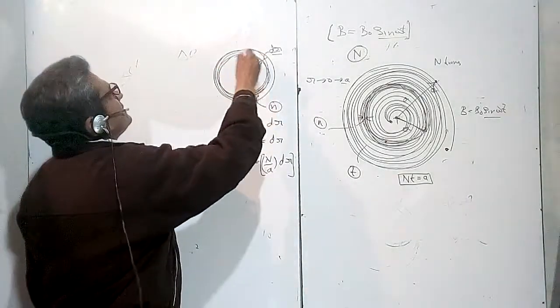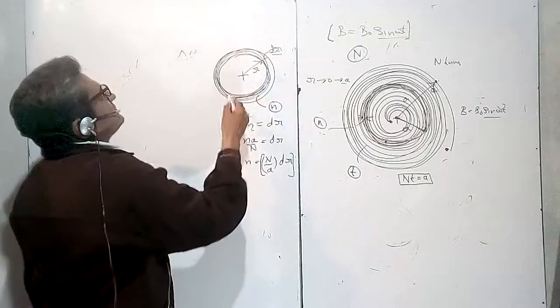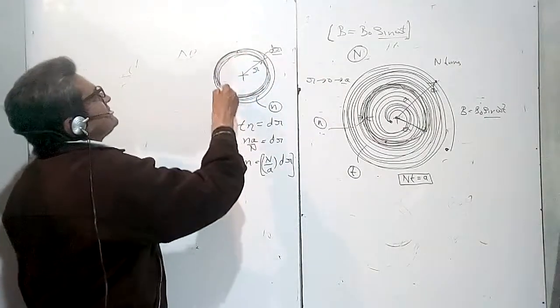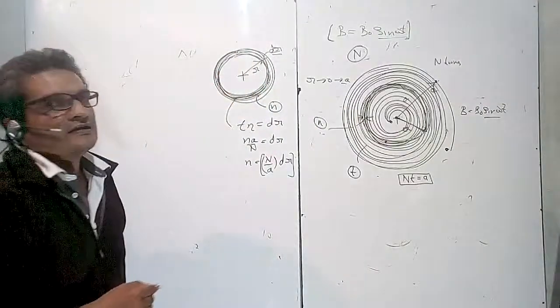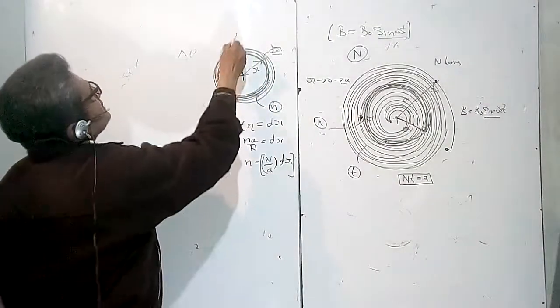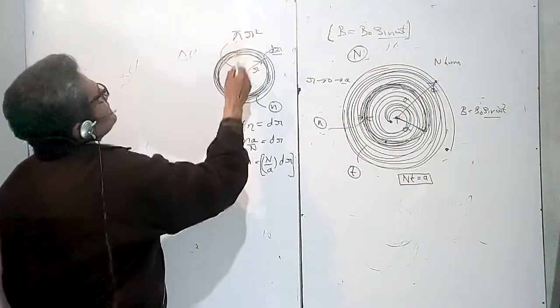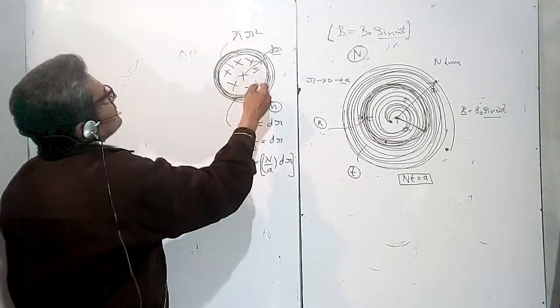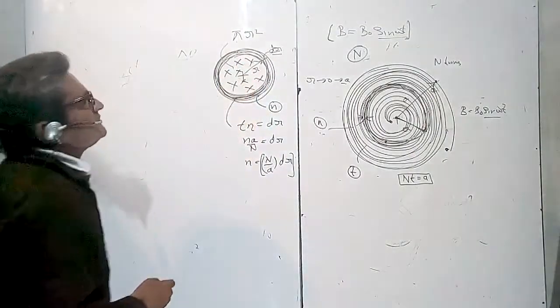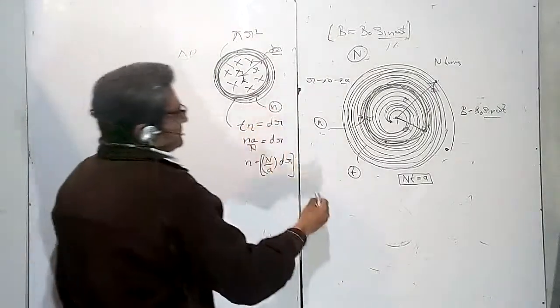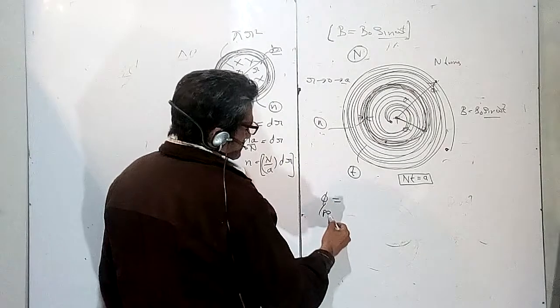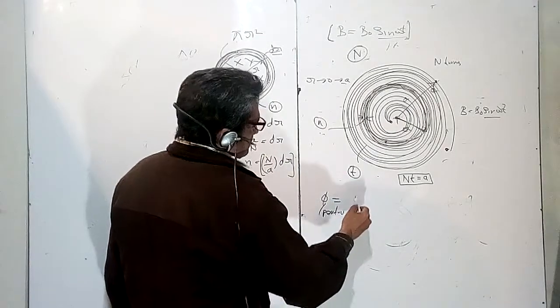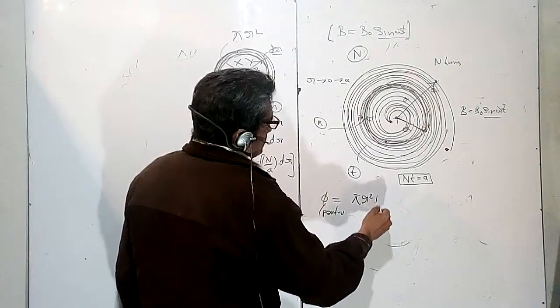For this small patch with this number of turns, this coil encloses an area. The area is πR². The magnetic field is B. So what is N times πR² into B?